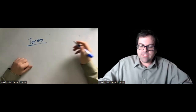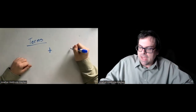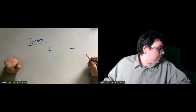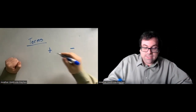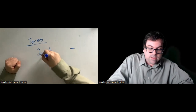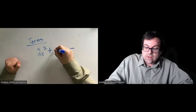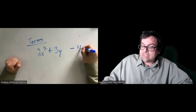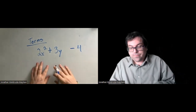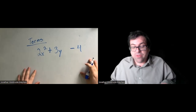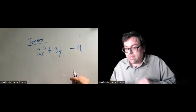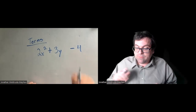Terms and expressions are things that are separated by pluses and minuses. If we had, for instance, 2x squared plus 3y minus 4, this would have three terms: 2x squared, 3y, and minus 4.